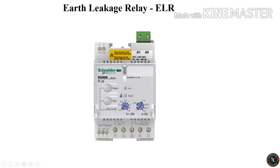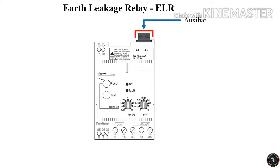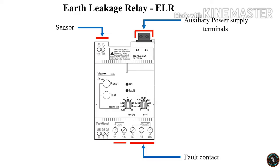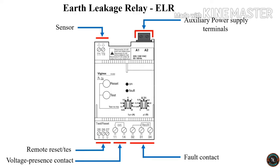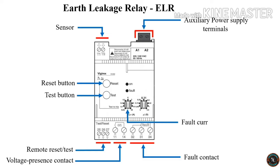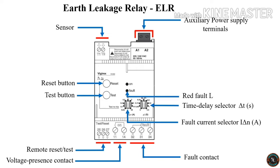Let's identify the items of the ELR: auxiliary power supply terminals, sensor, fault contact, voltage presence contact, remote reset or test reset button, test button, fault current selector I-delta-N in Amperes, time delay selector delta-T in seconds, red fault LED, and green power LED.